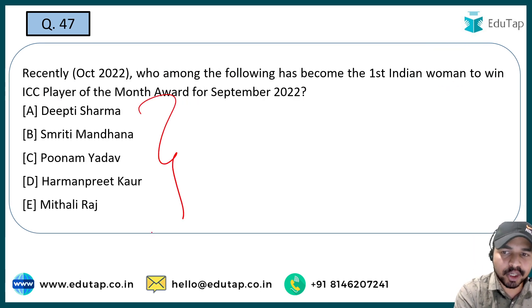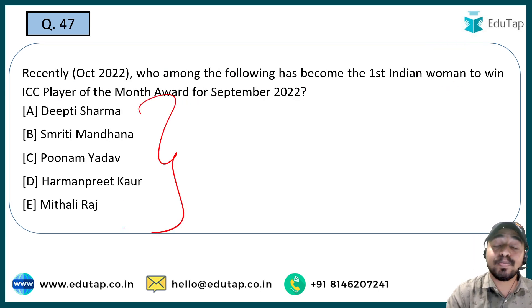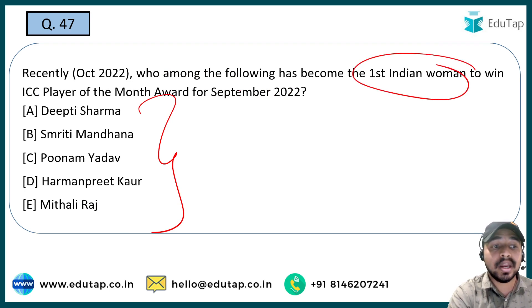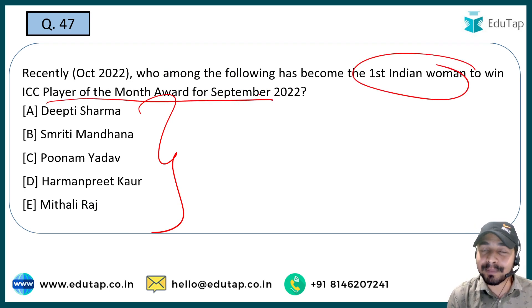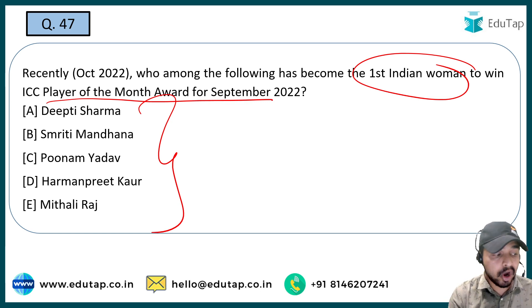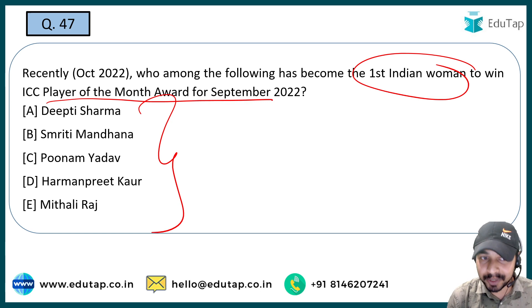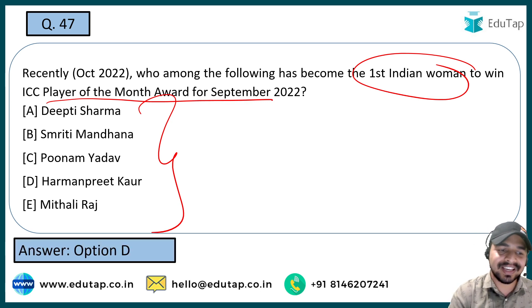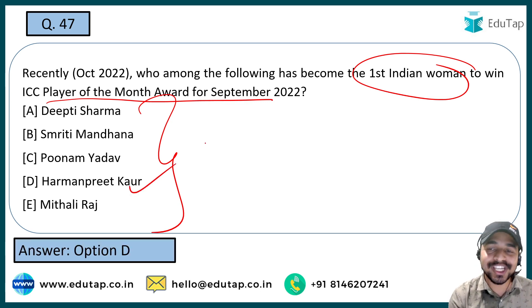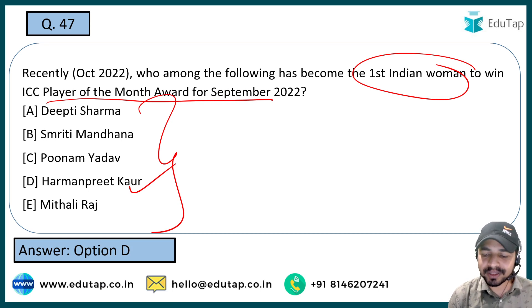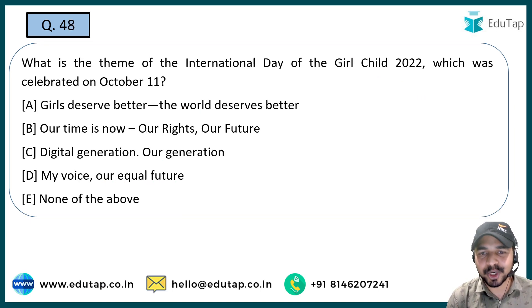The next question: which player has become the first Indian woman to win the ICC Player of the Month award for September 2022? Options are Deepti Sharma, Smriti Mandhana, Poonam Yadav, Harmanpreet Kaur, and Mithali Raj. The right answer is Harmanpreet Kaur, who has become the first Indian woman to win the ICC Player of the Month award for September 2022.